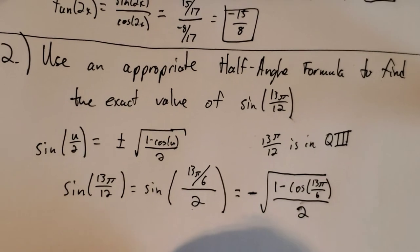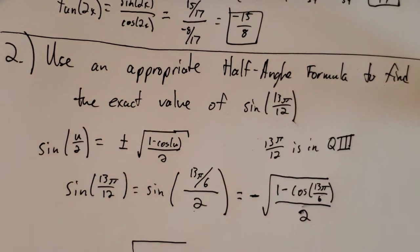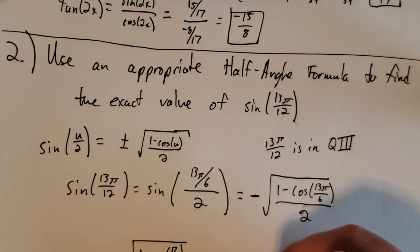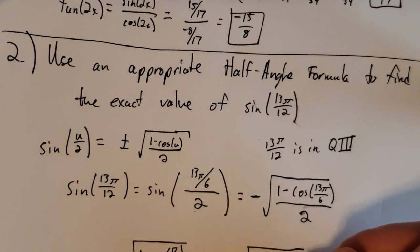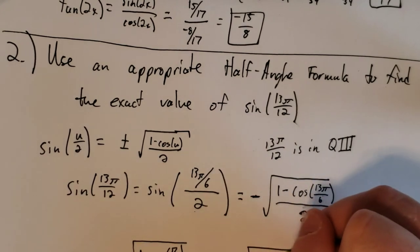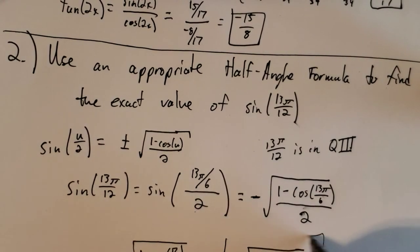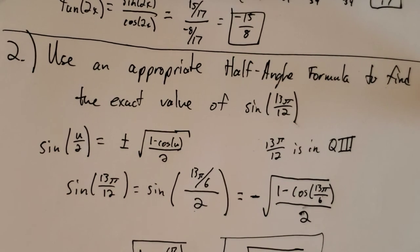And now here, cosine of 13 pi over 6 is the same as cosine of pi over 6, because pi over 6 is the coterminal angle between 0 and 2 pi of 13 pi over 6. So this is the same as 1 minus cosine of pi over 6 all divided by 2. So this is negative the square root of 1 minus cosine of pi over 6 is the square root of 3 over 2, all over 2. And that is our exact value for 13 pi over 12.